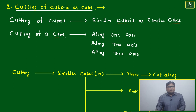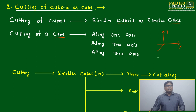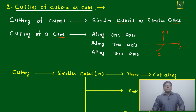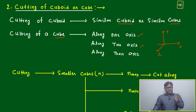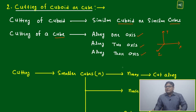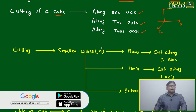For cutting a cube, we know it is a 3D figure with x, y, z axes — one side length, one side width, one side height. We have the option to cut along one axis, two axes, or all three axes. The number of pieces produced depends on how many axes we choose to cut along.